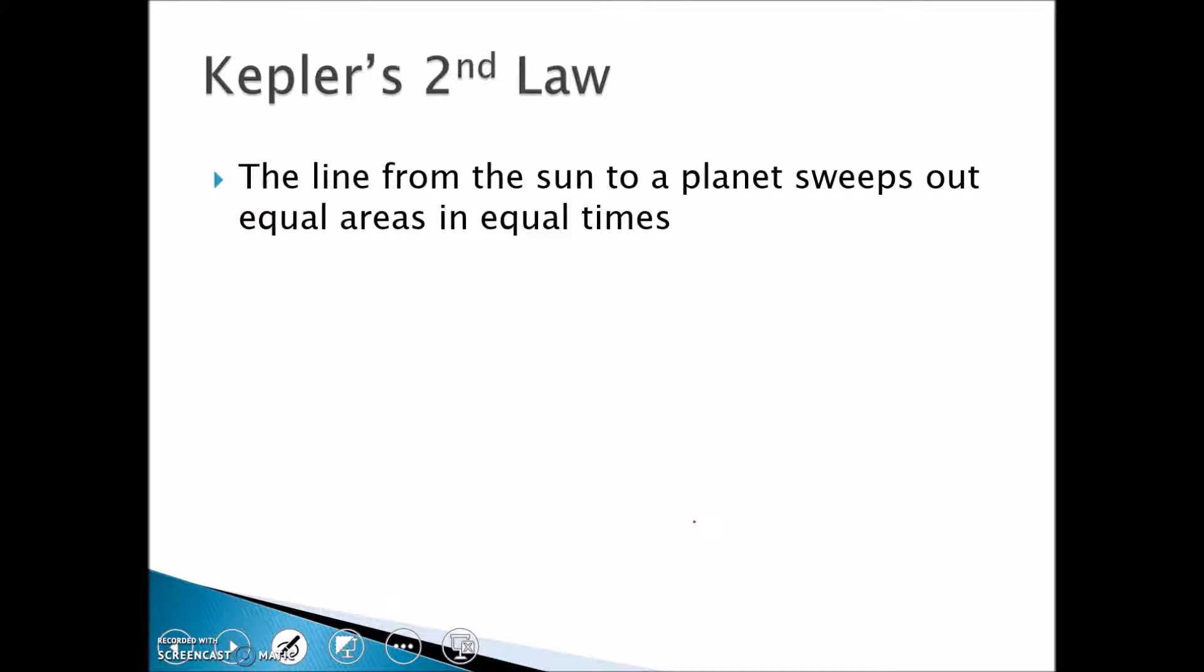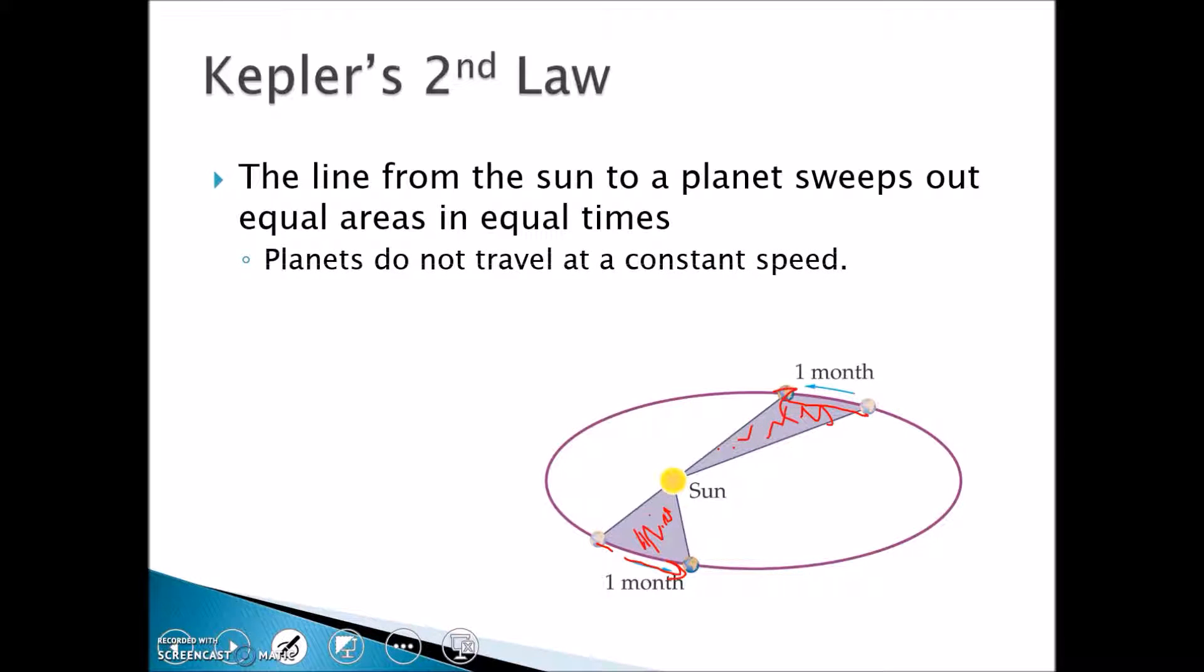His second law states that a planet sweeps out equal areas in equal times. What that's saying is if the planet takes a month to go from here to there, and if you take a month from another point in its path, these areas are the same. The conclusion is something that Kepler noticed through the mathematical data. What it means is the planets do not travel at a constant speed. It obviously travels faster when it's closer to the sun. Kepler didn't realize that or why, but it does.